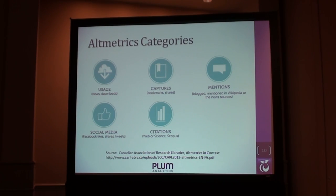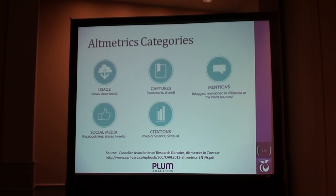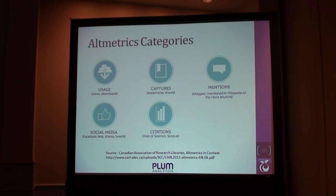When we talk about altmetrics, there are a lot of them. I'll show you some examples of different sources and different types of things we're tracking. But to make sense of them, we use categories. This is from a paper in the Canadian Association of Research Libraries using five categories. One is usage — classically we think of usage as PDF downloads, HTML downloads. We kind of understand that, and that goes back to the COUNTER thing.